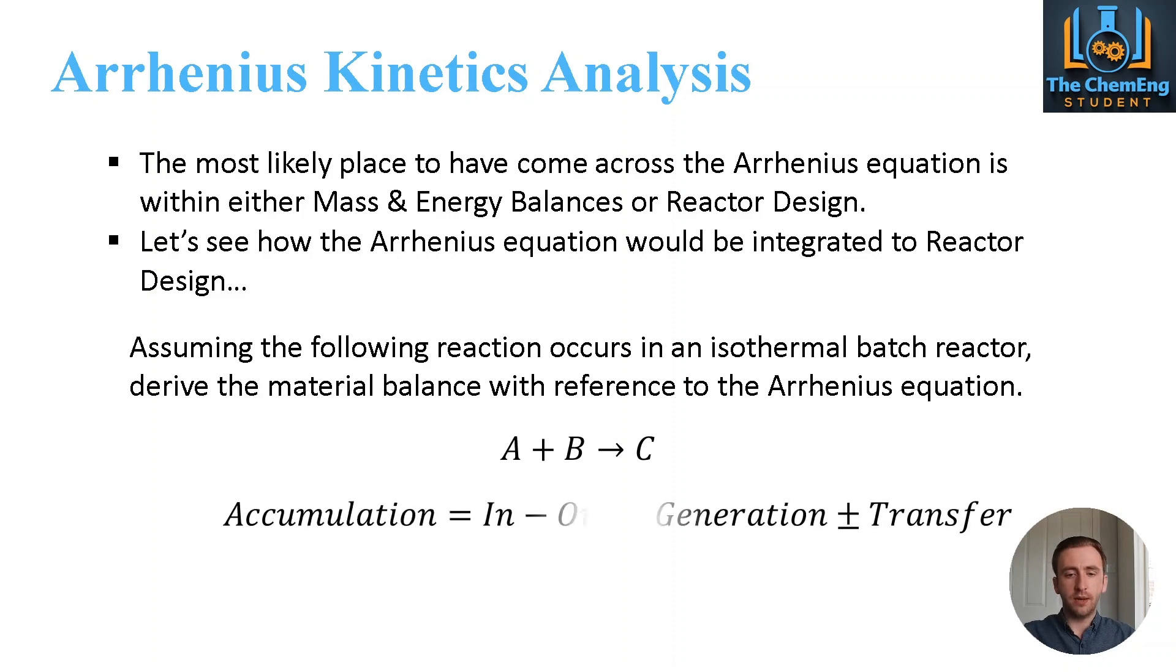So in order to do this we need to apply the general mass balance. So that would be your accumulation is equal to in minus out plus or minus the generation plus or minus transfer. Now we're a batch reactor, so we can do some simplifications. We can get rid of the in and out flows. We can also get rid of the transfer because we're isothermal, which means we have no heat transfer. But we're also assuming we have no mass transfer taking place. So this balance becomes the accumulation is equal to the generation. That is, the amount of mass that accumulates is equal to the amount of C that has been generated.